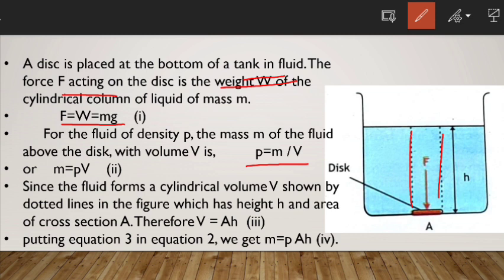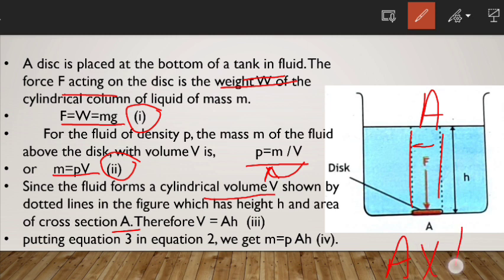To find mass, we rearrange: m equals ρV. This is equation 2. Since the fluid forms a cylindrical volume V shown by the dotted lines in the figure which has height h and area of cross section A, therefore the volume equals V equals Ah. This is equation 3.